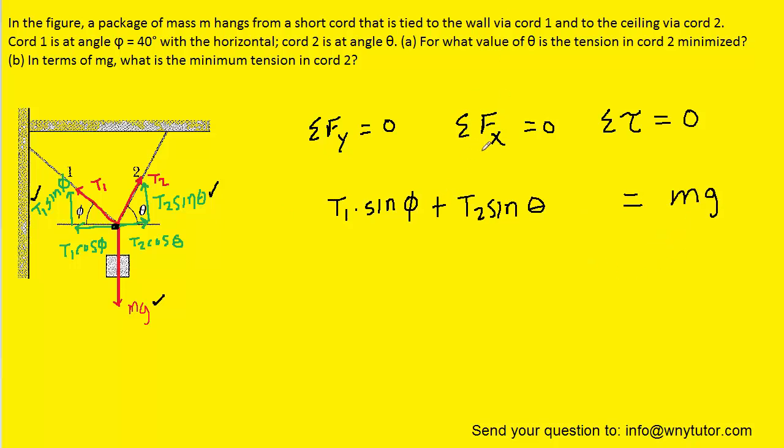We can next look at the sum of the forces acting in the x direction. There are two of them: the x component of T2 and the x component of T1. The x component of T2 is pointing in the positive x direction, so we can say positive T2 cos theta. And then the x component of T1 is in the negative direction, so we have minus T1 cos of phi. Let's add the cos of phi over to the right hand side.